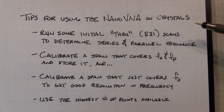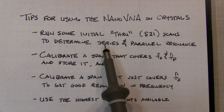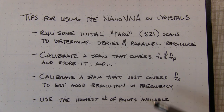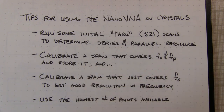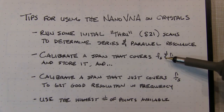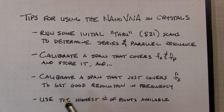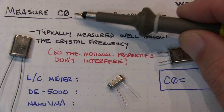A couple of tips when using the nanoVNA to measure crystals: you'll probably want to run some initial through scans — S21 scans — to determine the series and parallel resonant frequency points. Then calibrate a span that covers both the series and parallel resonant frequencies and store that calibration. Also calibrate a narrower span that just covers the series resonant point, maybe just 5 to 10 kHz, to get very good frequency resolution. If you have the choice, use the highest number of sweep points available.